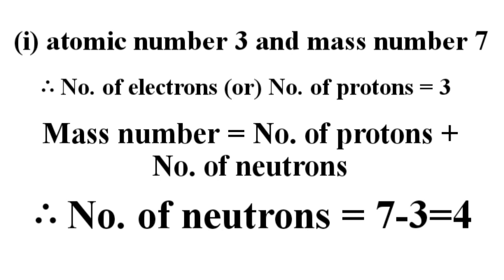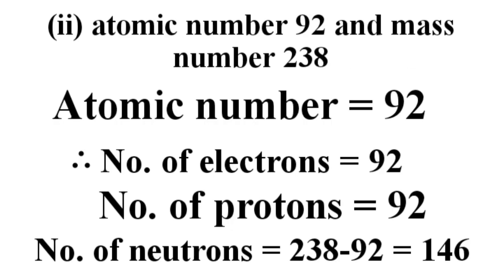For the second part — atomic number 92, mass number 238 — atomic number is 92, so number of electrons = 92 and number of protons = 92. Number of neutrons = mass number minus protons = 238 minus 92 = 146. So number of neutrons is 146.